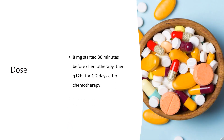Dose — Chemotherapy-induced nausea and vomiting prophylaxis: For moderately emetogenic chemotherapy, 8 mg started 30 minutes before chemotherapy, then every 12 hours for 1–2 days after chemotherapy. For highly emetogenic chemotherapy, 24 mg started 30 minutes before chemotherapy.